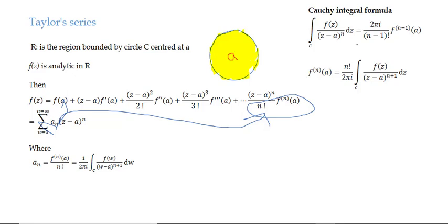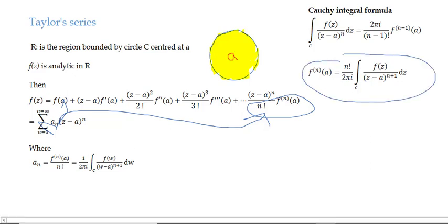Recalling the Cauchy integral formula: the integral along closed curve C of f(z)/(z−a)^n dz equals 2πi × (n−1)! × f^(n−1)(a). Substituting n−1 = n, we get f^(n)(a) = n!/(2πi) × ∮_C f(w)/(w−a)^(n+1) dw, where I have changed z to w for the Laurent series derivation.